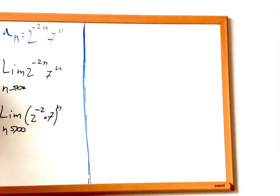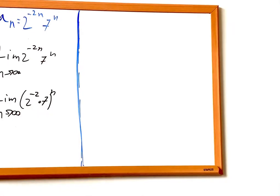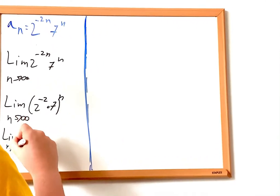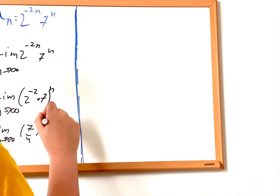And if we use our exponential rules, we see that this is the same thing if we expand this. And if we evaluate this, this will be the limit as n approaches infinity of 7 over 4 to the power of n.